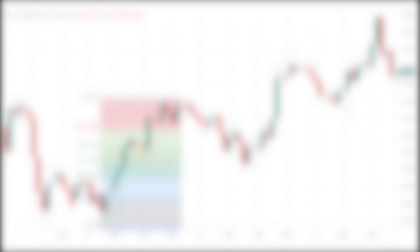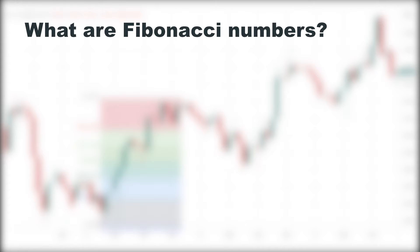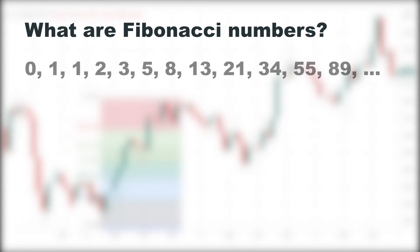First, let me explain very shortly what Fibonacci numbers are for those who are not familiar with the series of numbers. The Fibonacci series starts with 0 and 1, and after that, any number that comes in the series is the sum of the two previous numbers. The Fibonacci series is like this as you can see, but this is not all and there are some amazing facts about these numbers.